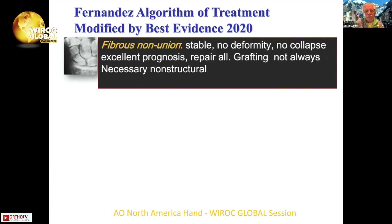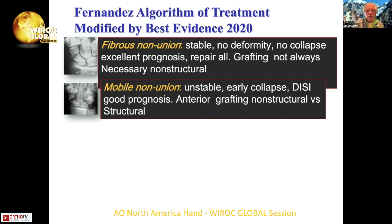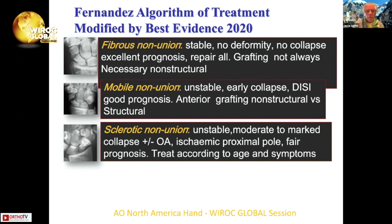If grafting is considered, it's not necessary to be structural. Once you start having a larger defect or mobile nonunion — even those with a pseudarthrosis — these may have an instability pattern. Anterior grafting may be able to not only reduce the malalignment but also provide a structural or non-structural graft, as we'll touch upon. Once you start getting into more problematic positions, as Dr. Blazer showed, we have to start thinking about age and symptoms with carpal arthritis developing.